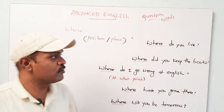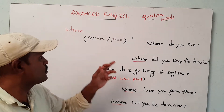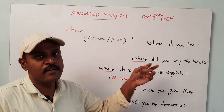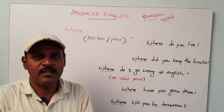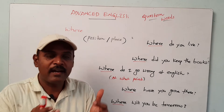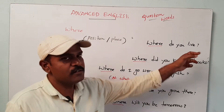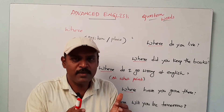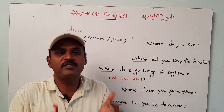Now I am going to look at another word, that is 'where'. Usually 'where' refers to position or place. Whenever we are asking someone's position or something's place, we need to use 'where'. For example: 'Where do you live?' — that means I am asking you what is your place of living, what is your place of dwelling.